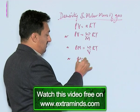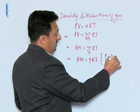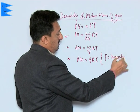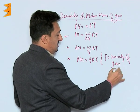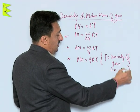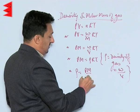So we can write PM equals rho RT, where this rho is called density of gas, which is equal to mass upon volume. So we can write density as PM over RT.